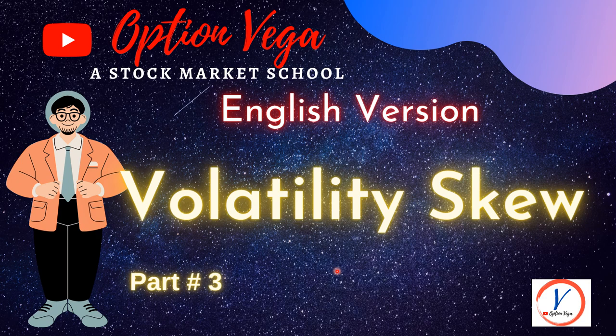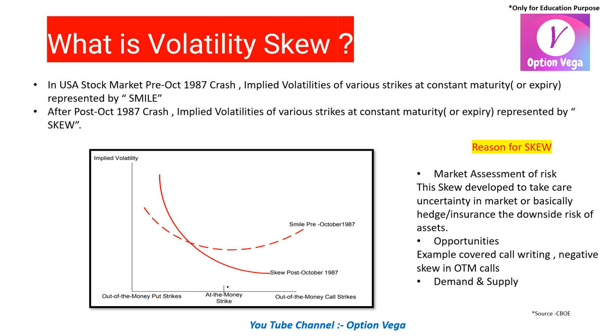In part one, we discussed about the option price and volatility relationship using the option pricing model. In part two, we touched upon implied volatility — how we can calculate it using the Black-Scholes pricing model and how we can see the implied volatility for put as well as the call side using the option chain. You can find part one and part two in the upper right corner.